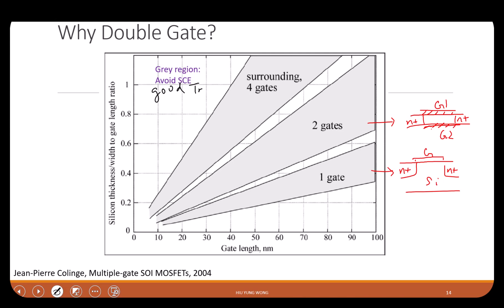What is the meaning of four gates? We need a 3D view. This is silicon, and we surround it with the gate — you wrap the silicon wire with oxide in all four directions. That is what we call four gates.